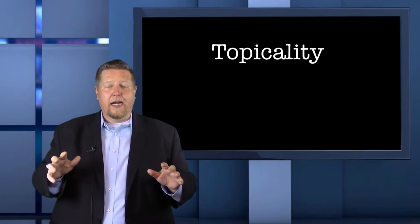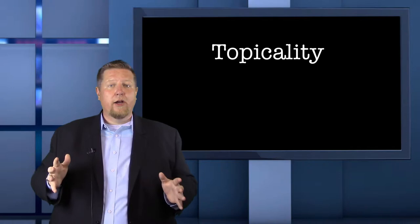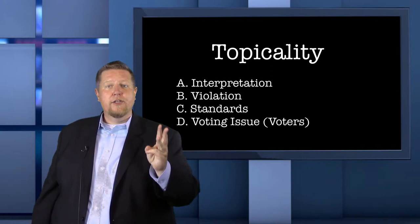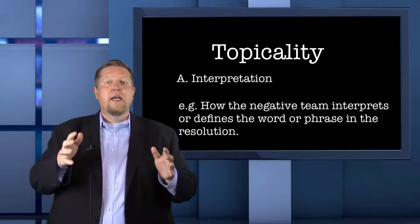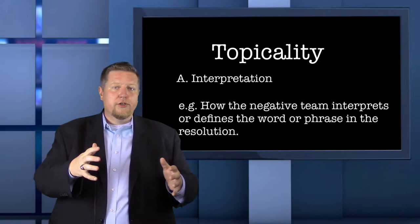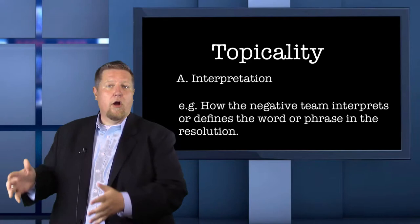So you're the negative team and you've decided that the proposed affirmative plan is untopical. You've got your shell ready and you're going to run it as the first argument in the first negative constructive. There are four sub-points to a topicality argument and they must be presented in order: interpretation, violation, standards, and voting issues. You can use the mnemonic device 'I vote, she votes' to remember the order. The interpretation sub-point is how you interpret the word or phrase and how it's violated by the affirmative plan. The negative team cannot just say the affirmative plan is untopical — they have to identify which specific word or phrase in the resolution is violated. By 'word' we mean a single word such as 'substantially' or 'curtail.' By 'phrase' we mean a group of words that belong together, such as 'the United States federal government.' If more than one word or phrase is violated, the negative team would run multiple topicality arguments.